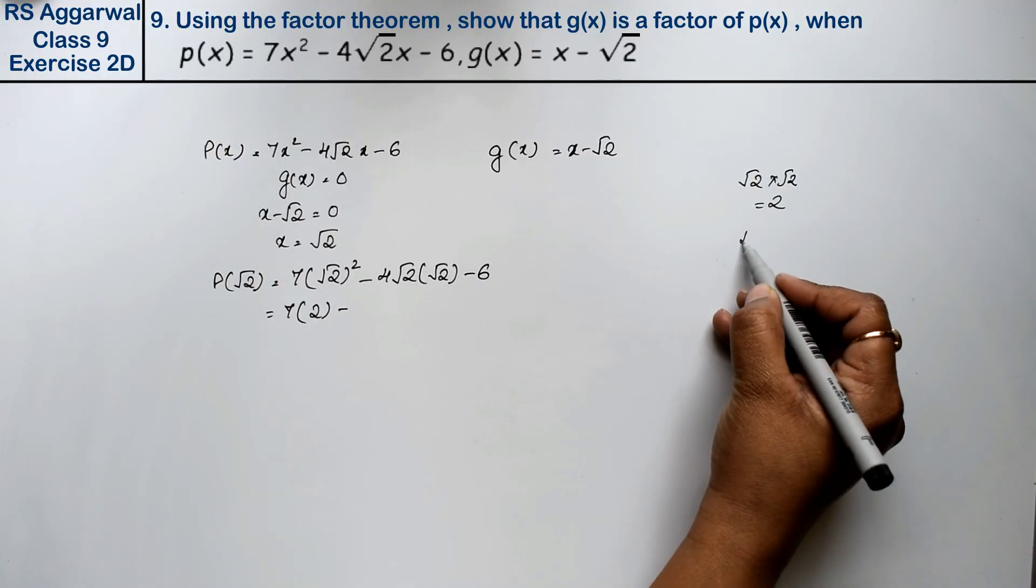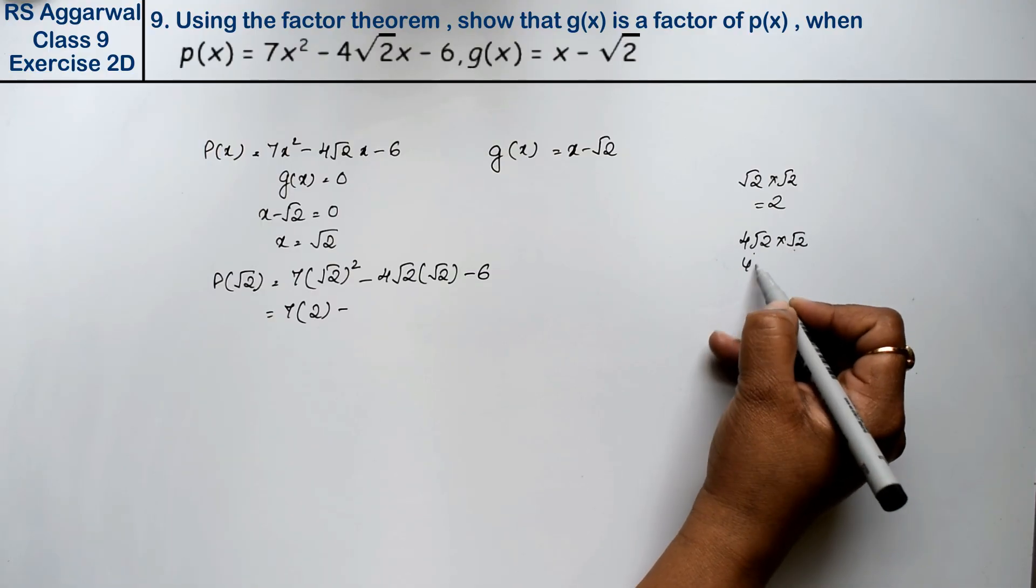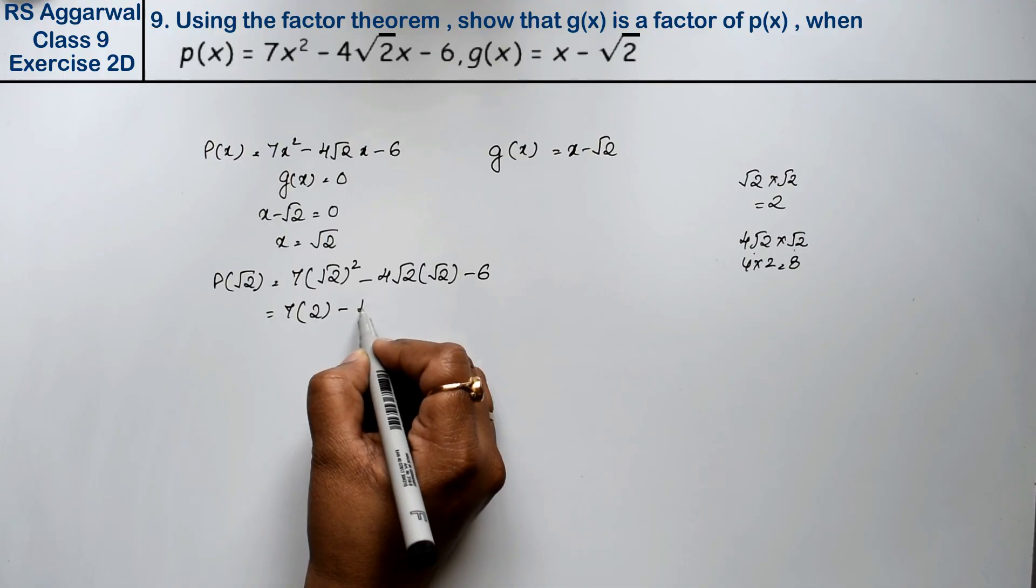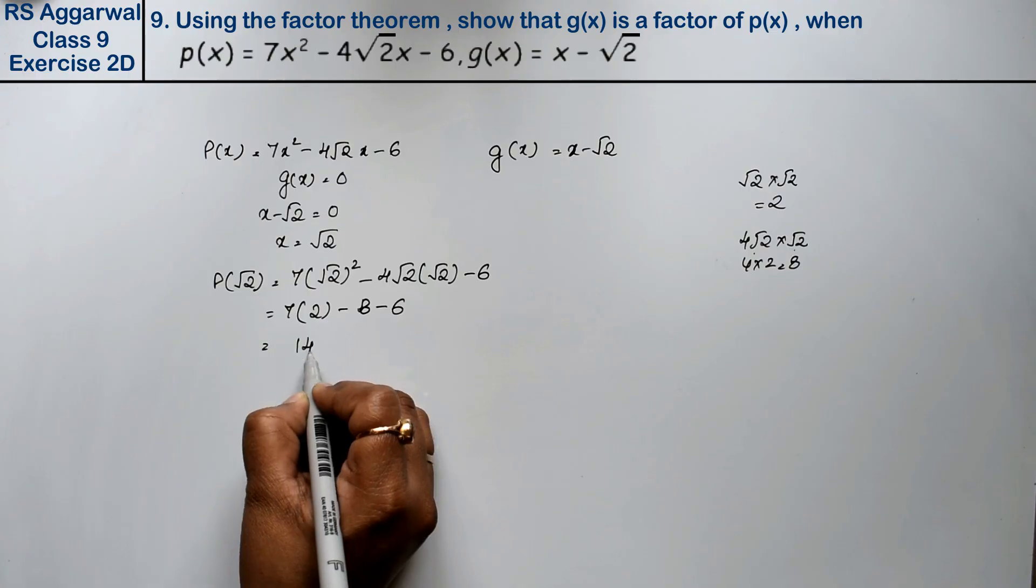So 4 into 2 is 8. This gives us 14 - 8 - 6, which equals 0.